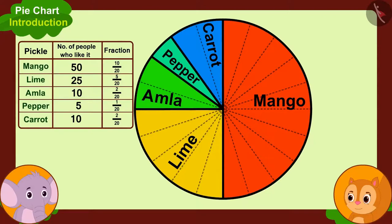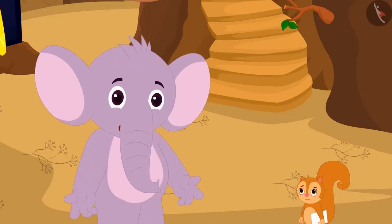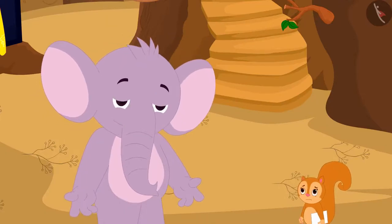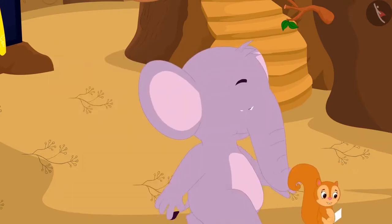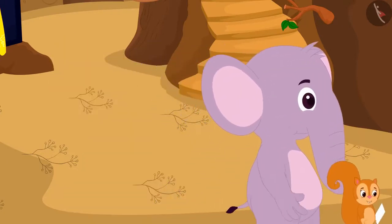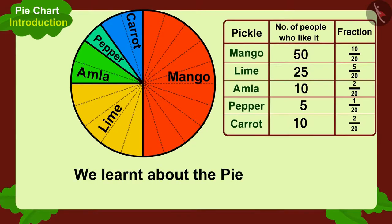Chanda agrees: 'That's right. That means we have to start selling mango pickle first.' They decide to eat something as they are both very hungry, and Appu and Chanda go to eat chapatis. Children, in this video we learned about the pie chart. In the next video, we will learn more about it through some interesting examples.